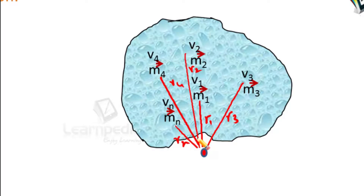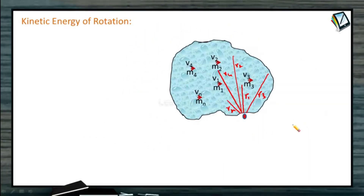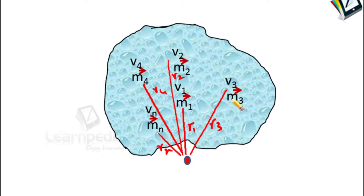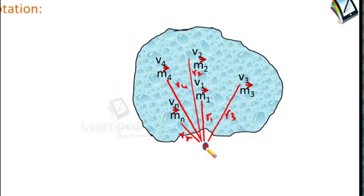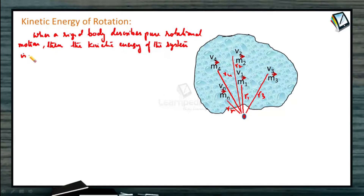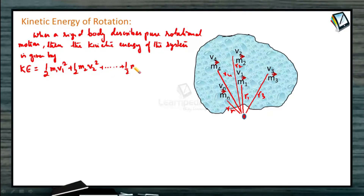Each and every particle is moving in a circular motion about this point, and the rigid body as a whole is moving in a circular motion. Masses m1, m2, m3, m4, mn are at distances r1, r2, r3, r4, rn respectively, and their velocities are tangentially v1, v2, v3, v4, and vn. As a whole, the rigid body completes one rotation about this fixed point. When a rigid body describes pure rotational motion, the kinetic energy of the system is given by the sum of kinetic energies of individual particles: half m1 v1² plus half m2 v2² plus so on up to half mn vn².